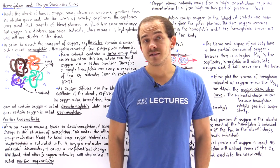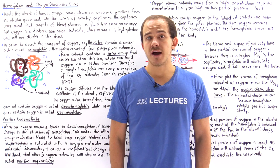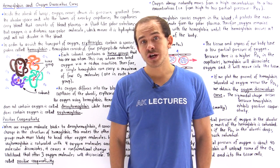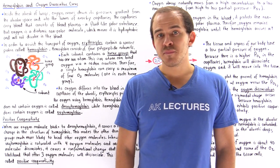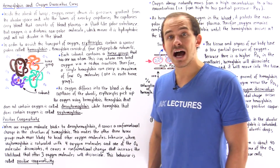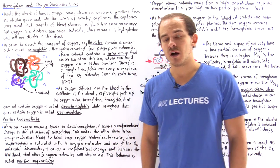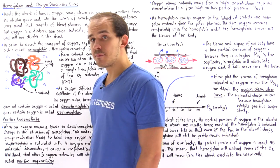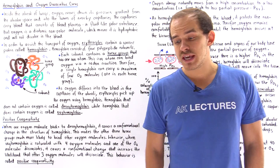In our discussion on the gas exchange process that takes place inside the alveoli of our lungs, we said that the partial pressure inside the alveolar space is much greater than the partial pressure inside the capillaries of our lungs. That's precisely why oxygen will move down its pressure gradient from the alveoli and into the capillaries. The next question is: what exactly happens to oxygen as soon as it arrives in the blood plasma of the capillaries?